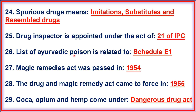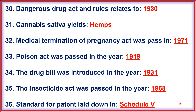26. List of Ayurvedic poison is related to Schedule E1. 27. Magic Remedies Act was passed in 1954. 28. The Drug and Magic Remedy Act came into force in 1955. 29. Coca, Opium, and Hemp comes under the Dangerous Drug Act. 30. Dangerous Drug Act and rules relate to 1930.